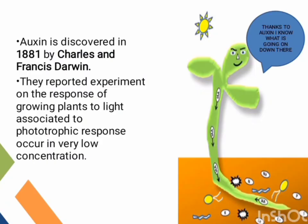If we look at Auxin's discovery, Auxin was discovered in 1981 by Charles and Francis Darwin. They both experimented on the response of growing plants to light, associated with phototropic responses occurring in very low concentration.